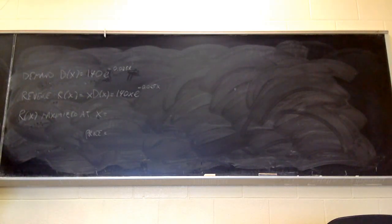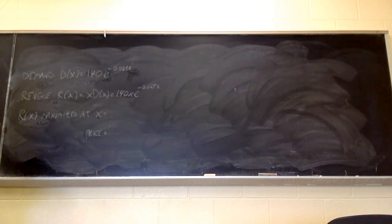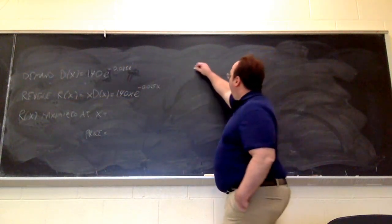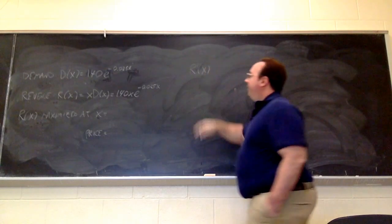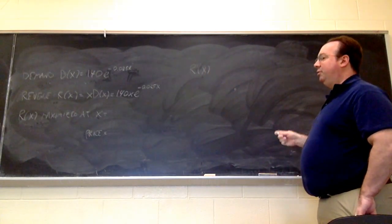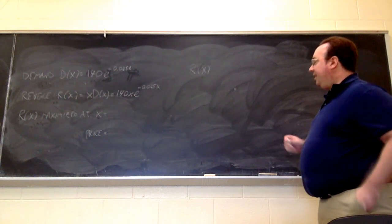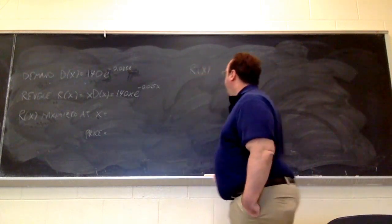Now, to find the value of x at which revenue is maximized, we've used this procedure before with other functions, we need to find the critical points. We need to find the derivative of the revenue function to find out where it's equal to 0. That's where the critical points are.